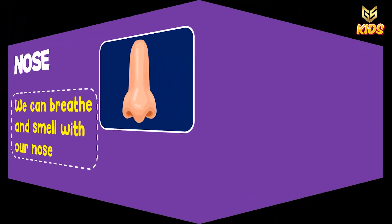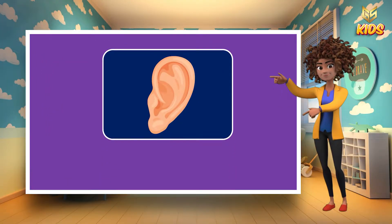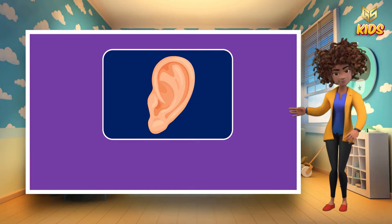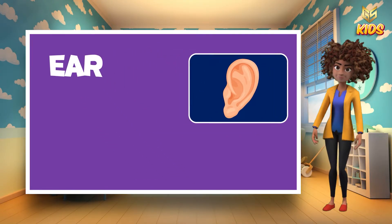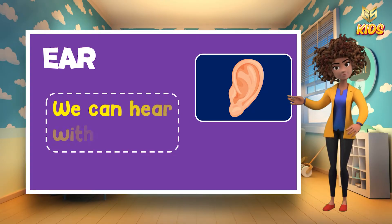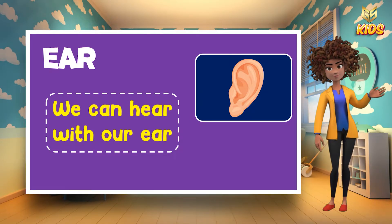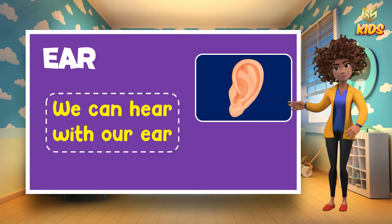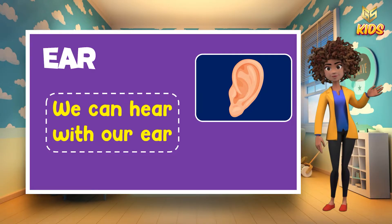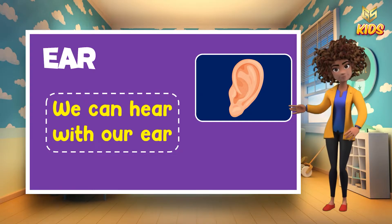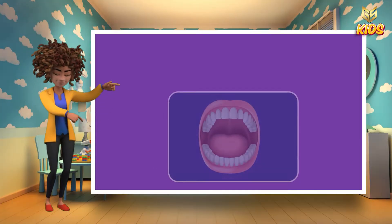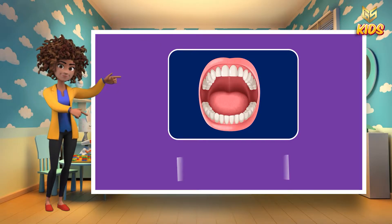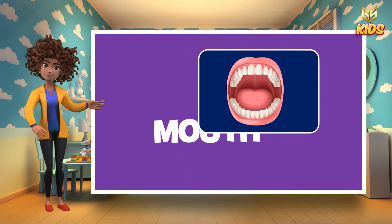What is this, children? Can you tell me? This is an ear. We can hear with our ear. Its function is we can hear with the help of our ear.